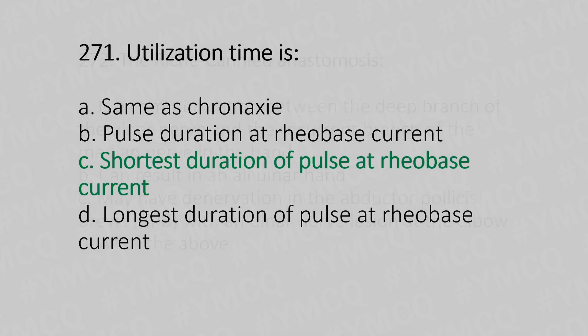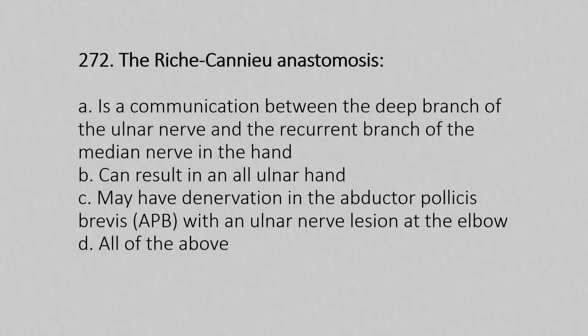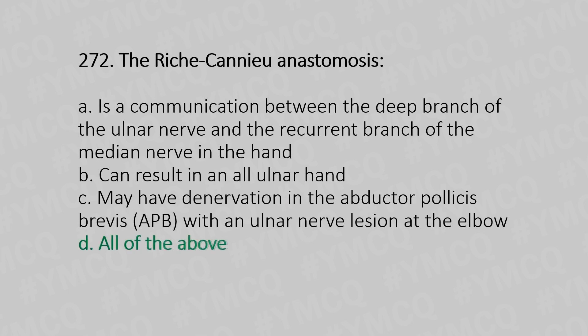Now let's move to question number 272. The Riche-Cannieu anastomosis: Option A, is a communication between the deep branch of the ulnar nerve and the recurrent branch of the median nerve in the hand; Option B, can result in an all-ulnar hand; Option C, may have denervation in the abductor pollicis brevis with an ulnar nerve lesion at the elbow; Option D, all of the above. And the answer is all of the above.